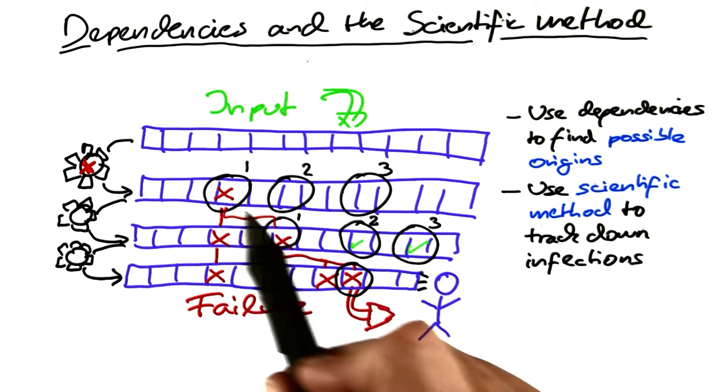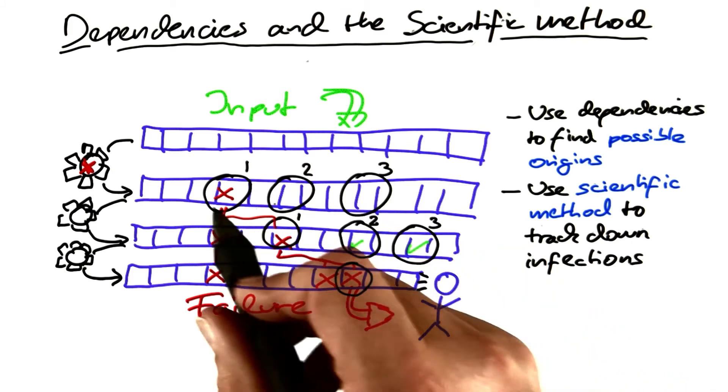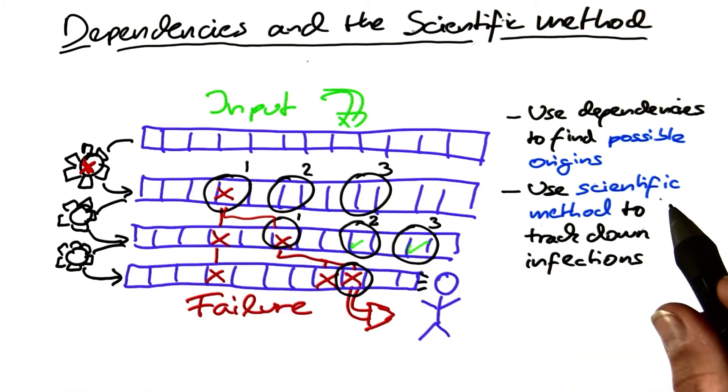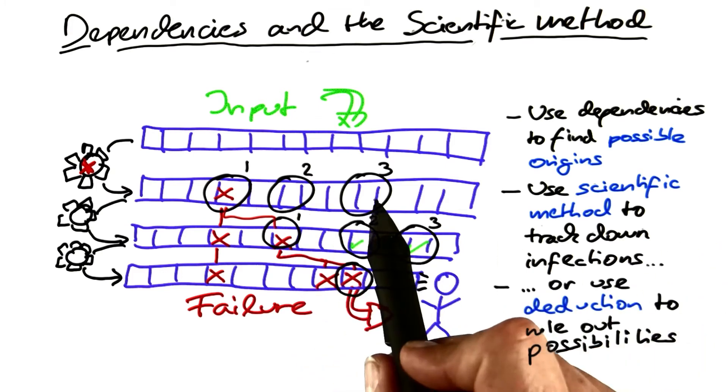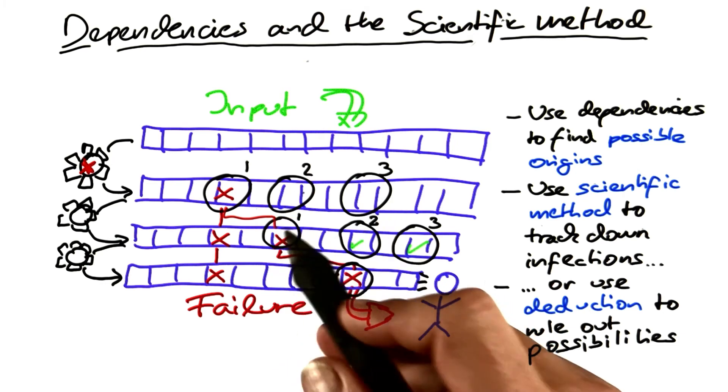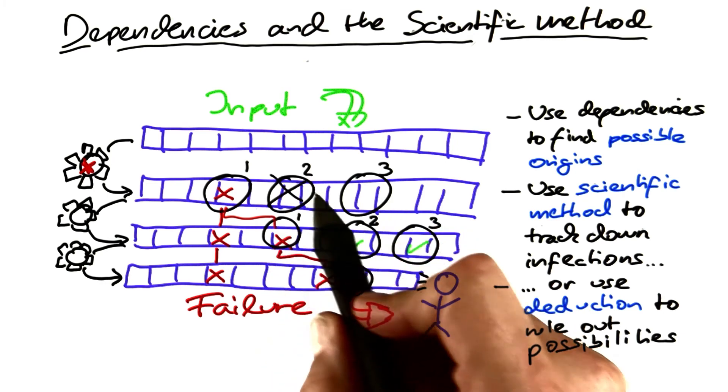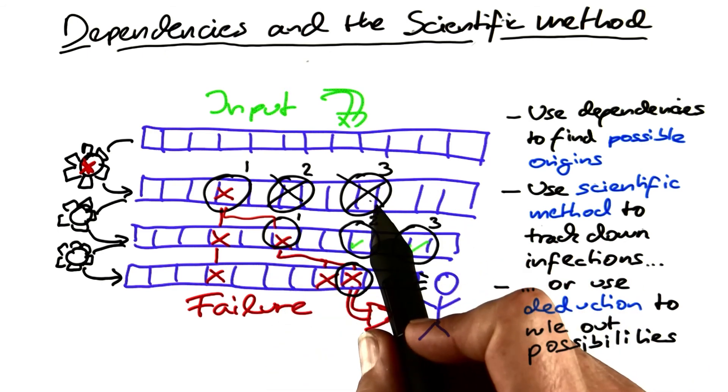Instead of the scientific method, you can also use deduction to rule out specific possibilities. For instance, you may be able to show that neither this one nor this one can possibly have influenced the state under these circumstances. So the only one that remains is the one up here.